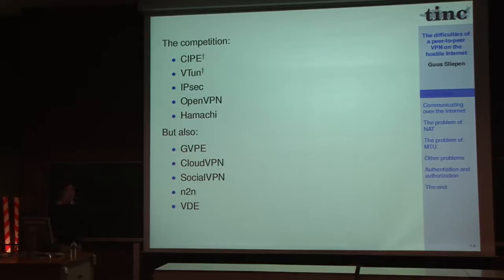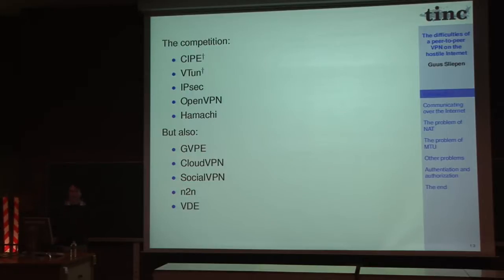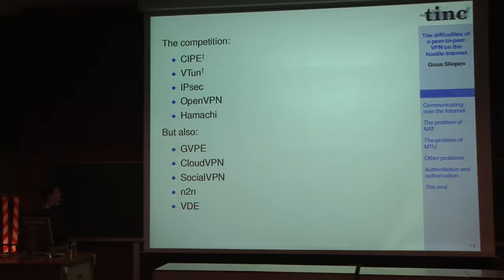Lesser-known but notable open source projects include GNU Virtual Private Ethernet, which started as a fork of tinc, as well as cloudVPN, socialVPN, and end-to-end. Last year there was a presentation here about Virtual Distributed Ethernet, which deals with connecting virtual machines together, but it actually shares most features with a VPN.